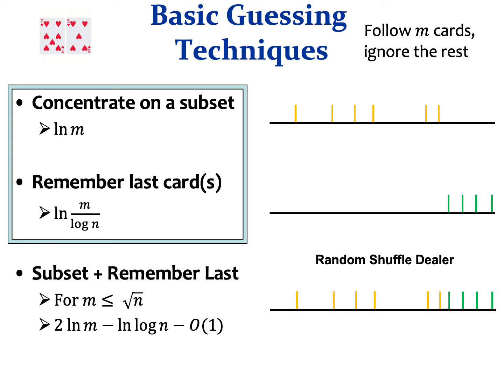The two methods are actually compatible. When playing against a random shuffle dealer, the guesser can allocate half her memory for subset guessing and half for remembering the last cards. If the guesser has square root of n bits of memory, then the last card from the subset is expected to appear before we remember the last cards. With m equals square root of n, this is near optimal.